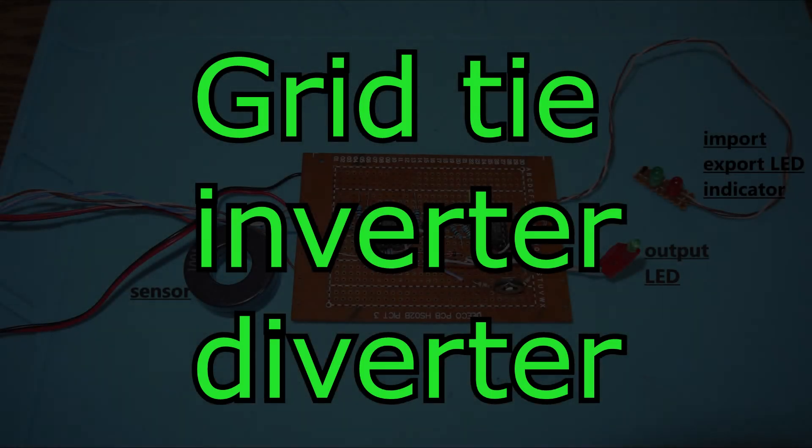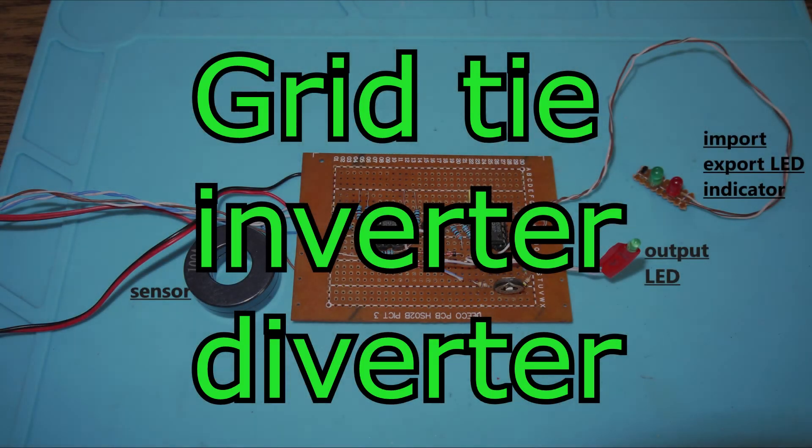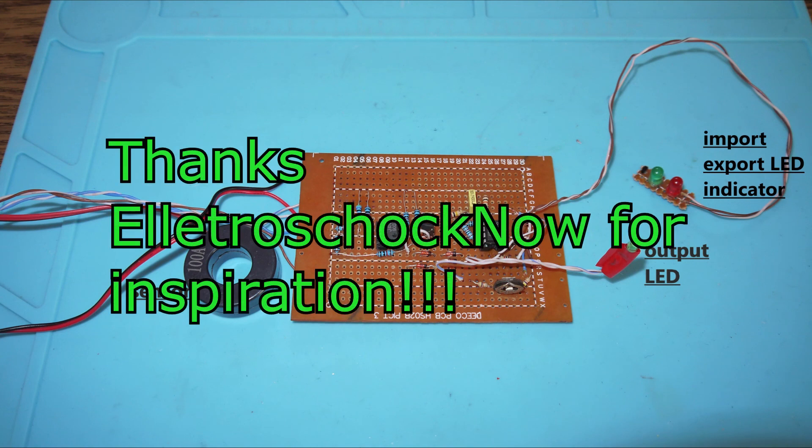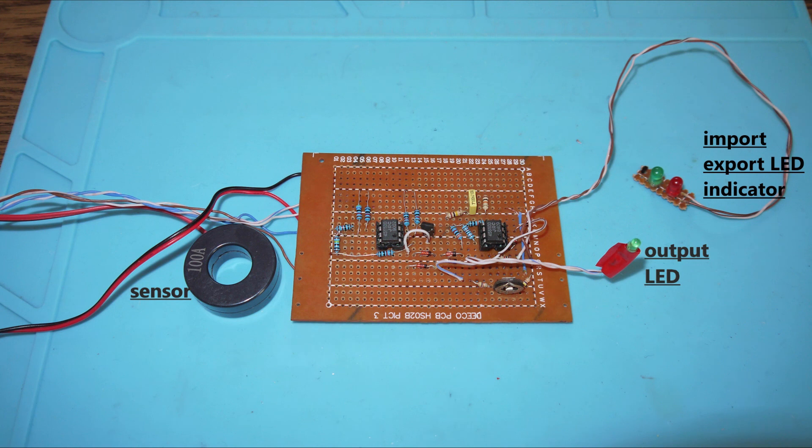Hello again, a new day, a new project. Today is something interesting - a diverter limiter. What is this kind of circuit doing? Well, it's keeping the solar production inside the house.